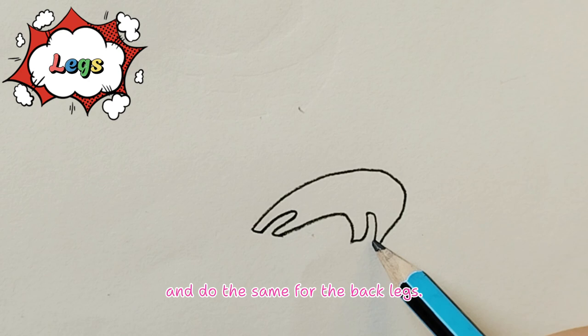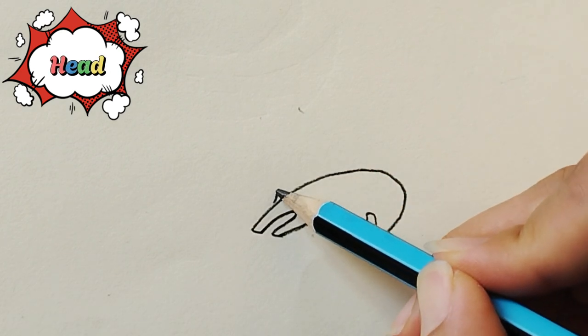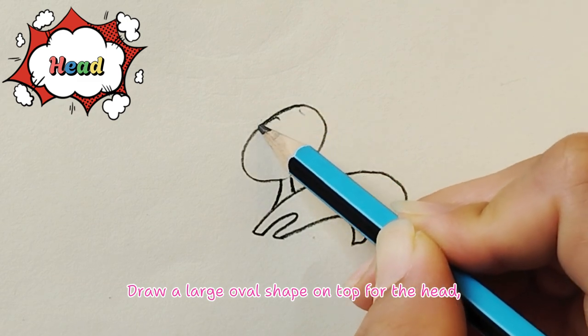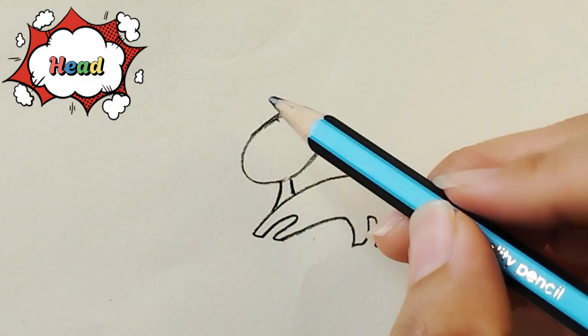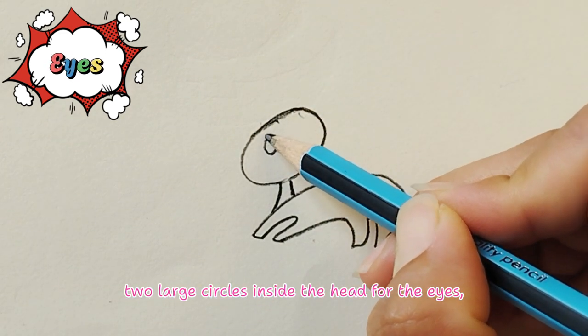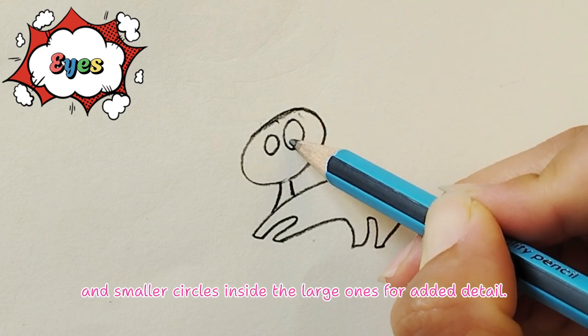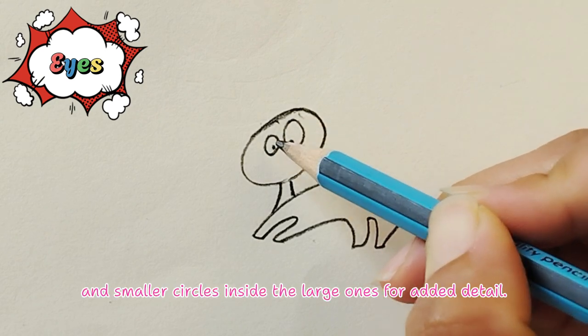Head and eyes. Draw a large oval shape on top for the head, two large circles inside the head for the eyes, and smaller circles inside the large ones for added detail. You got this!